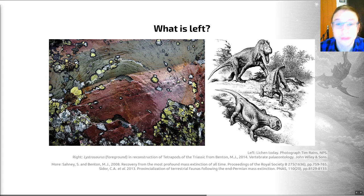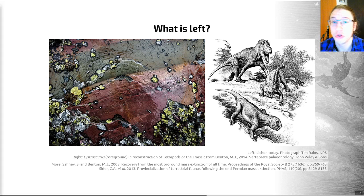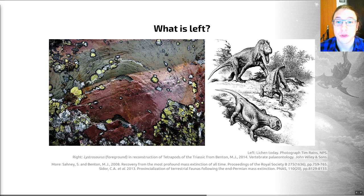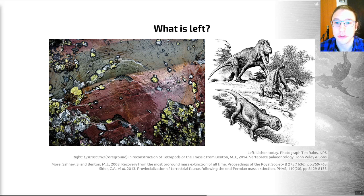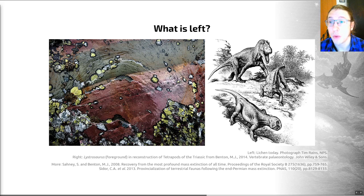Over time, disaster taxa diversify and start to occupy empty ecological niches — they begin to specialise toward a particular mode of life. Generally, we see that biodiversity recovers between 5 and 10 million years after many mass extinction events. For the most severe ones, recovery may take up to 30 million years. There are some interesting questions about the processes by which recovery occurs, which will be covered in the paleoecology lecture.